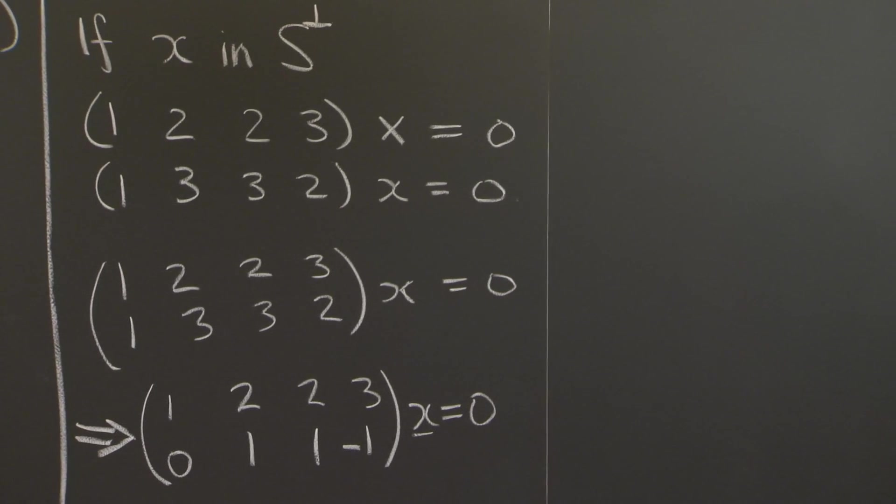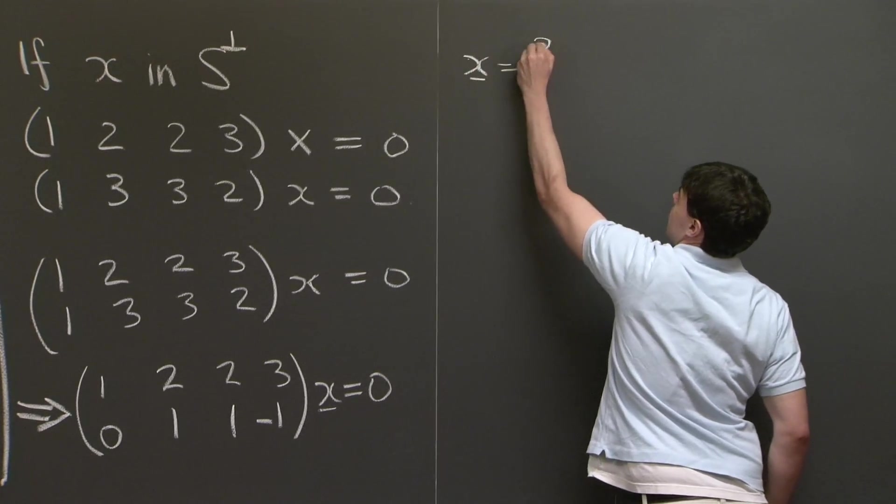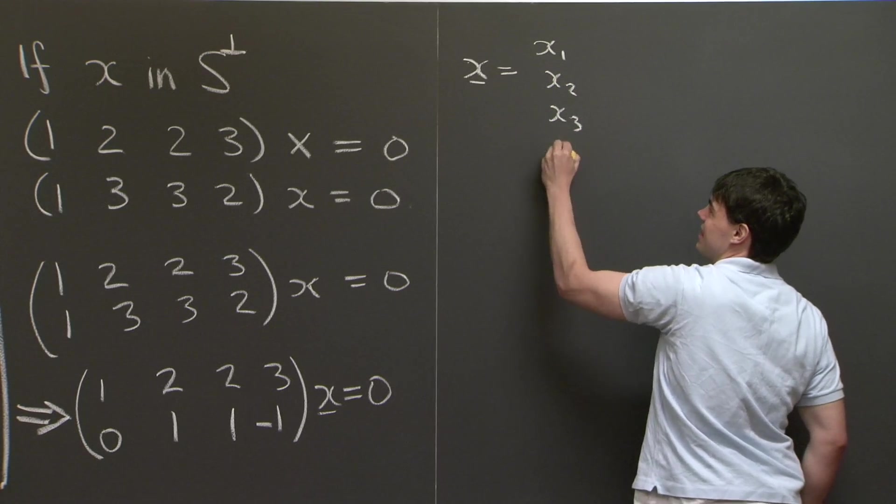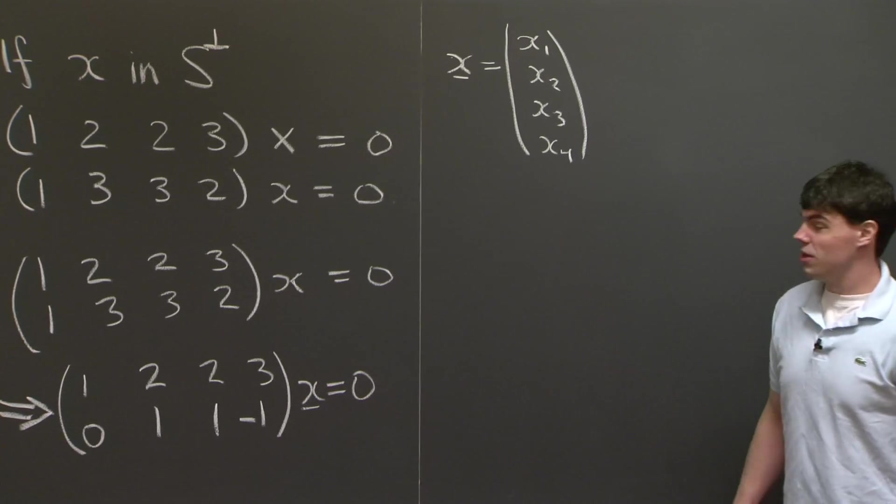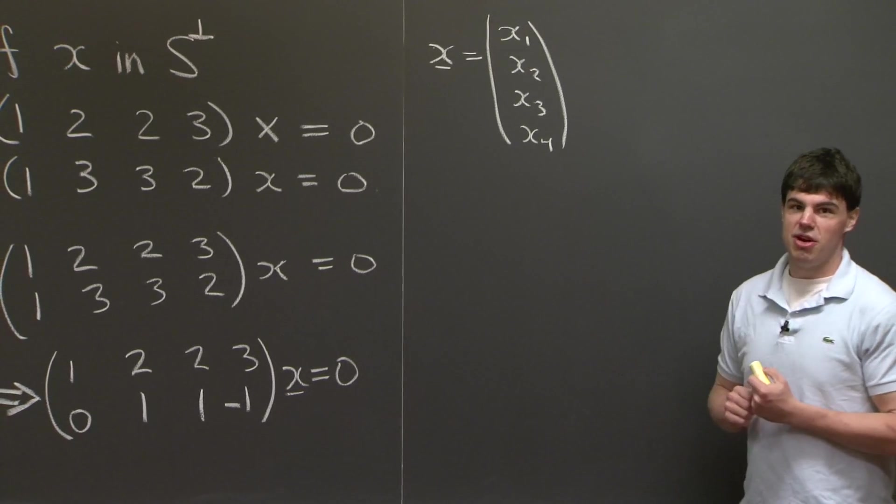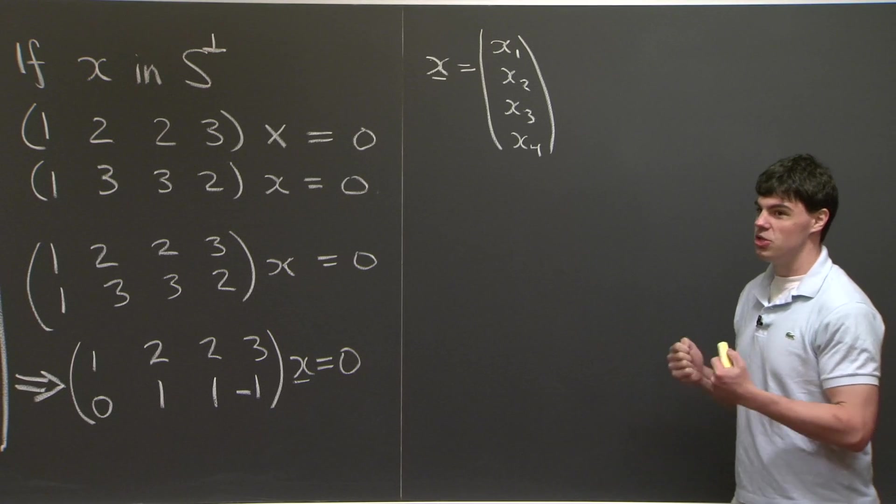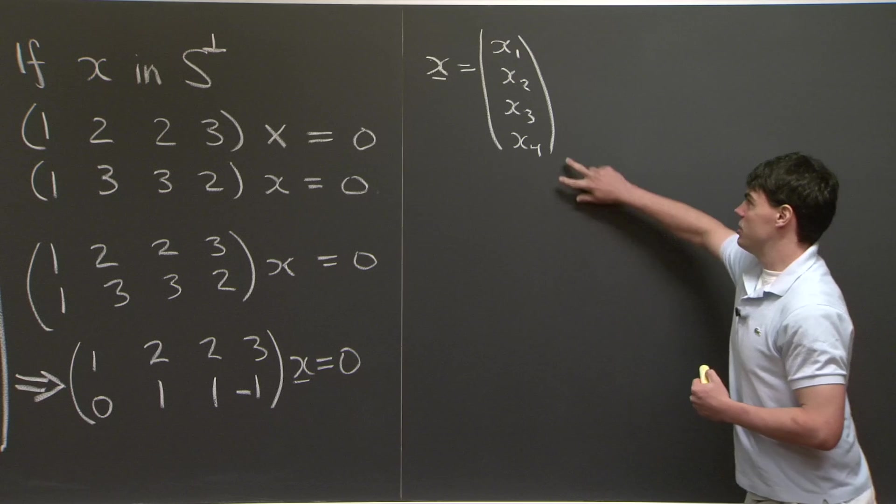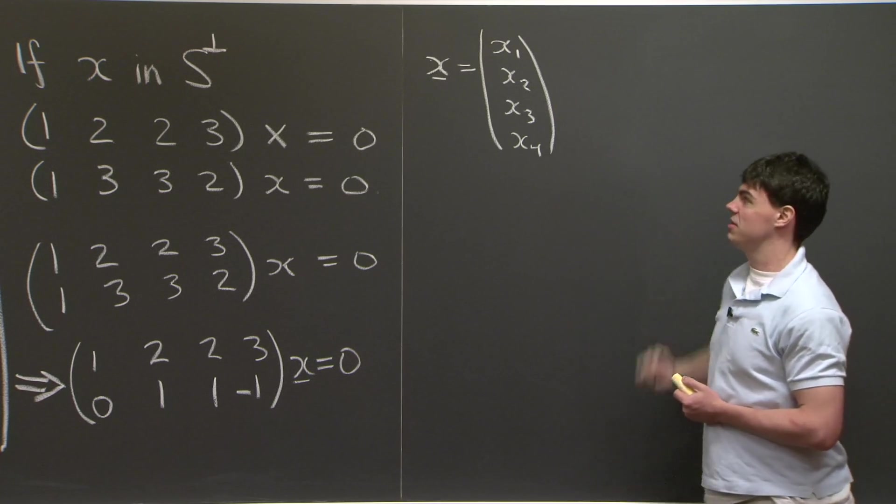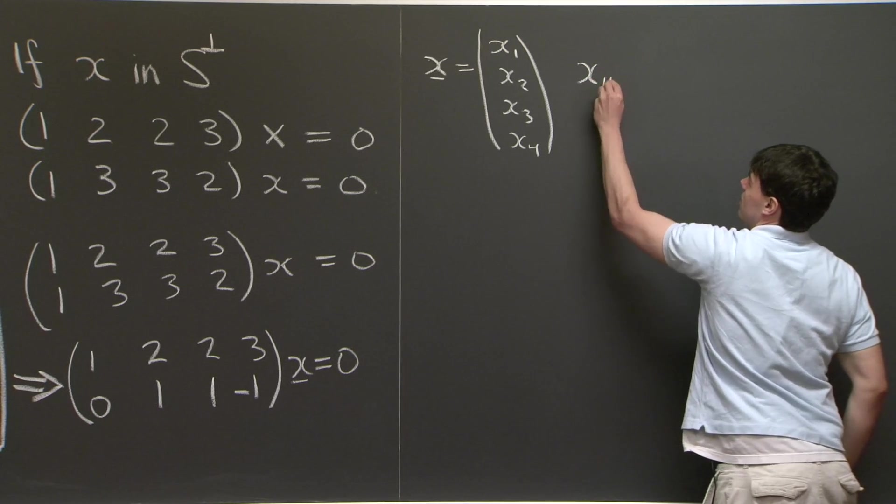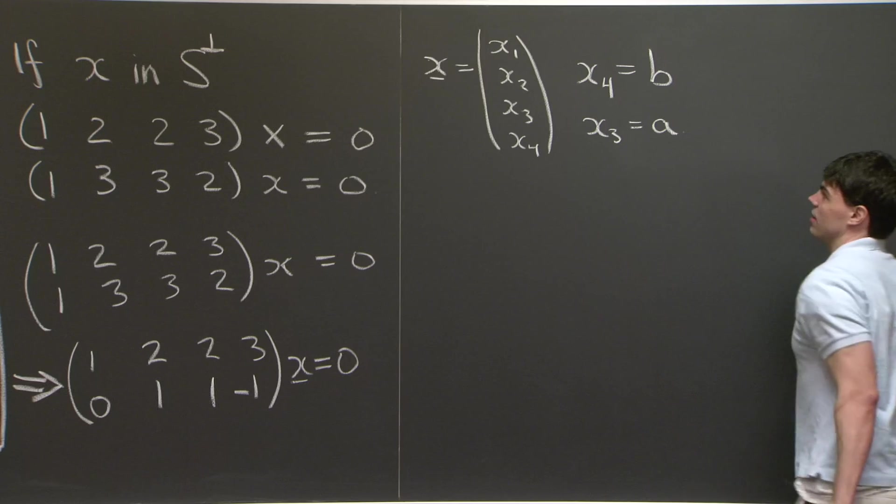OK, now to parametrize the null space, what I'm going to do is I'm going to write x out as components. So if I write x with components x1, x2, x3, and x4, we see here that this matrix has a rank of 2. Now, we're looking at vectors which live in R4, so we know that the null space is going to have a dimension which is 4 minus 2. So that means there should be two vectors in the null space of this matrix. To parametrize these two-dimensional vectors, what I'm going to do is I'm going to let x4 equal some constant and x3 equal another constant. So, specifically, I'm going to let x4 equal b and x3 equal a.